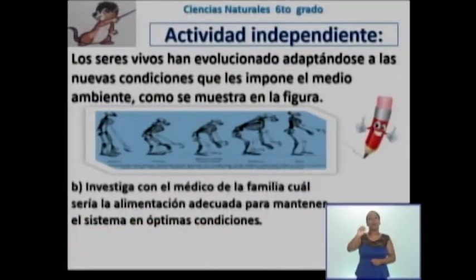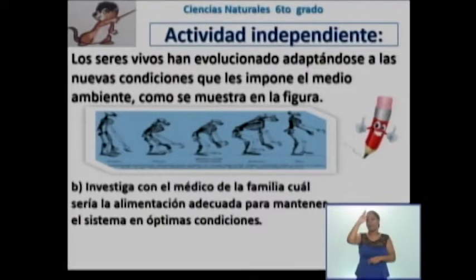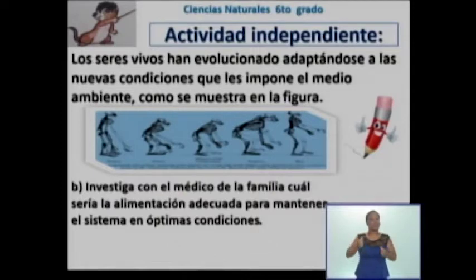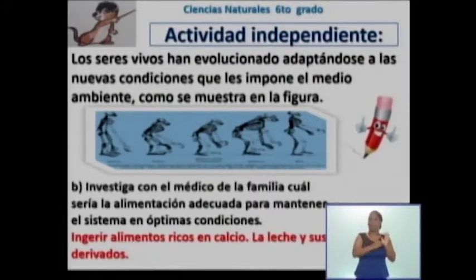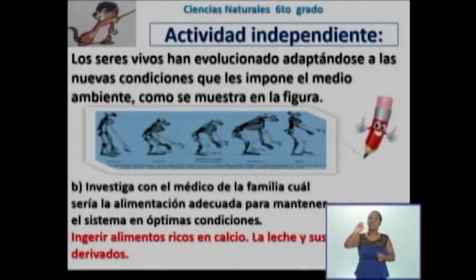En el caso del inciso B, estaba relacionado con investigar con el médico de la familia cuál sería la alimentación adecuada para mantener el sistema en óptimas condiciones. Estoy seguro que muchos pudieron contactar con su médico o con la enfermera de la familia en el tiempo que hacen pesquisas por sus hogares, y que algunas de las medidas para mantener una alimentación adecuada estaban referidas en ingerir alimentos ricos en calcio, como son la leche y sus derivados. Muy bien, estudiantes.